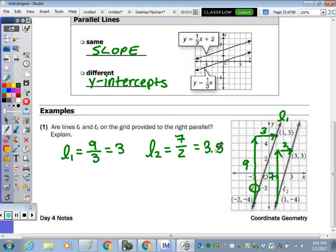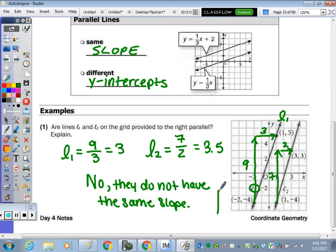So the lines are not parallel. And that's because they do not have the same slope. They have to have the same slope in order to be parallel. That's going to keep them the same distance apart.